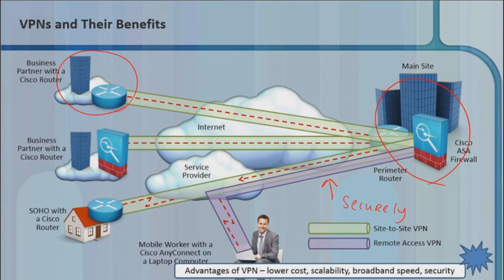Some of the advantages: of course, lower costs. If you're already paying for an outside interface, an internet connection to a service provider, why have a separate dedicated WAN interface when you can leverage your Metro Ethernet connection for something like a VPN?